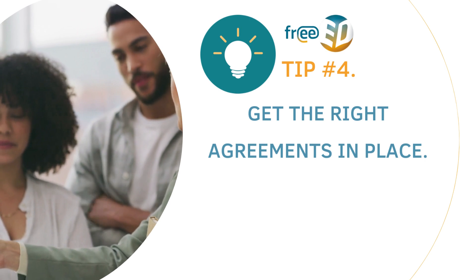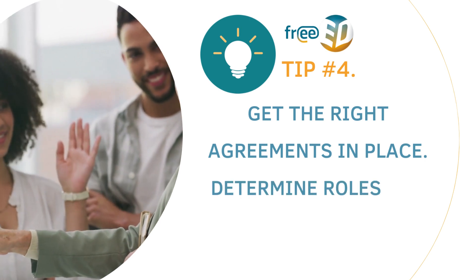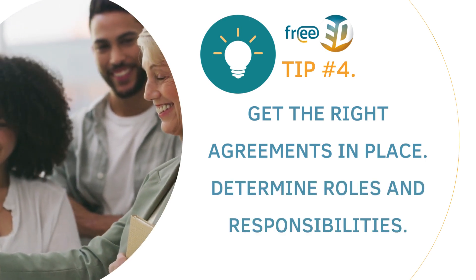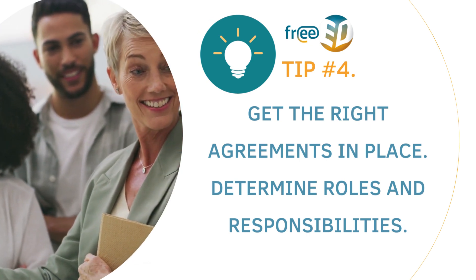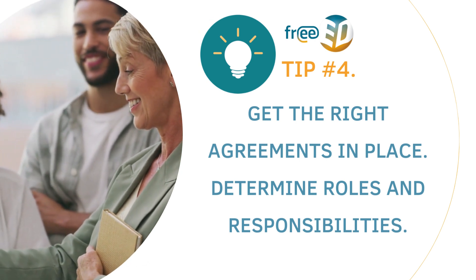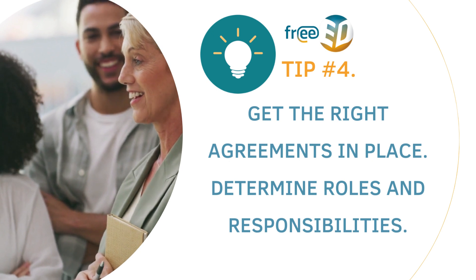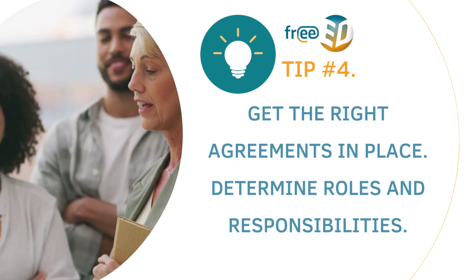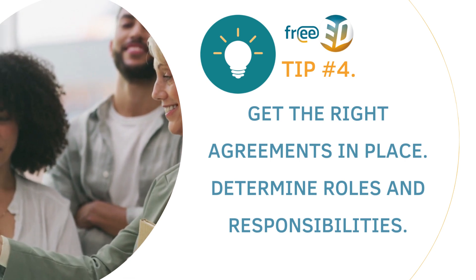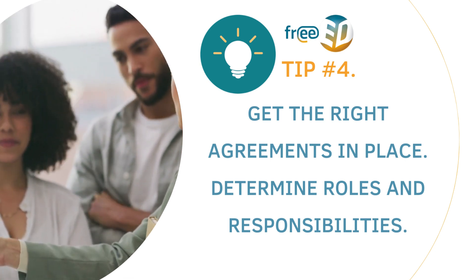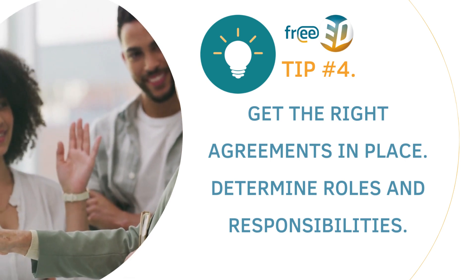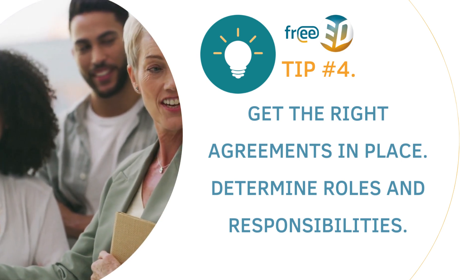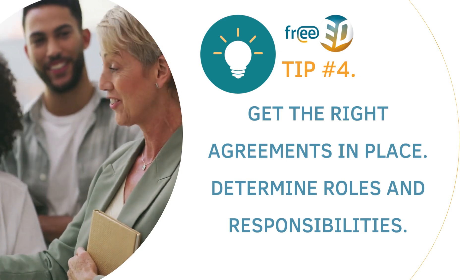Tip number four: get the right agreements in place. Determine roles and responsibilities. Your roles and responsibilities might be flexible and change throughout the year, but it's important to establish what each co-teaching partner expects from the other for the most efficient implementation of teaching activities. The work should be divided up fairly and support each other's strengths.